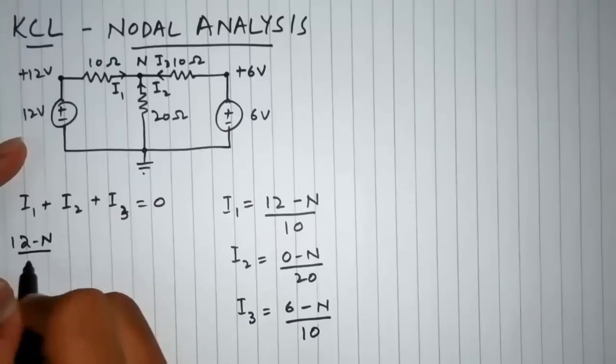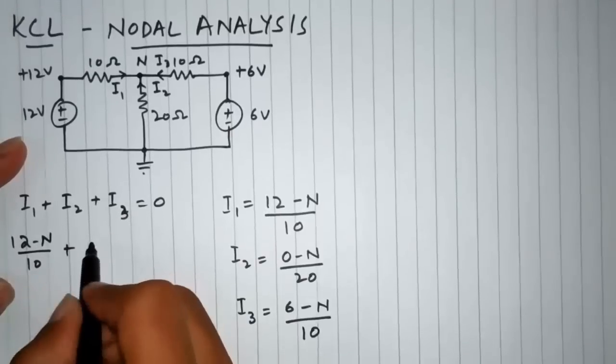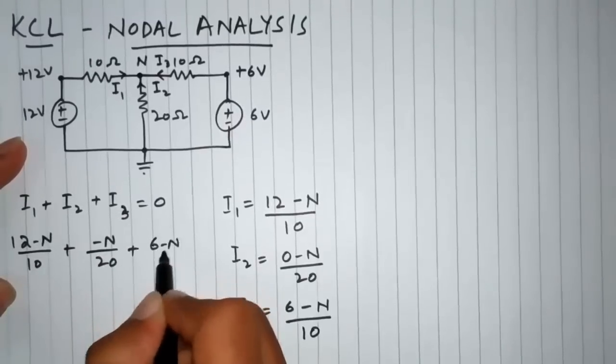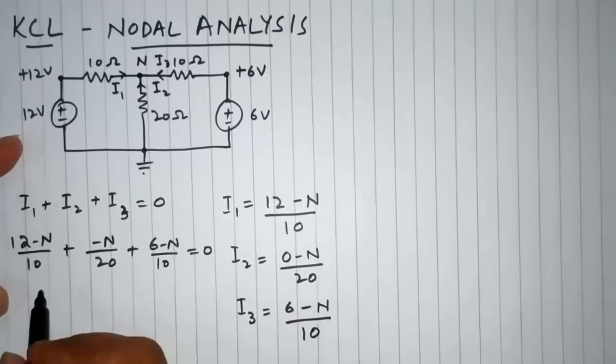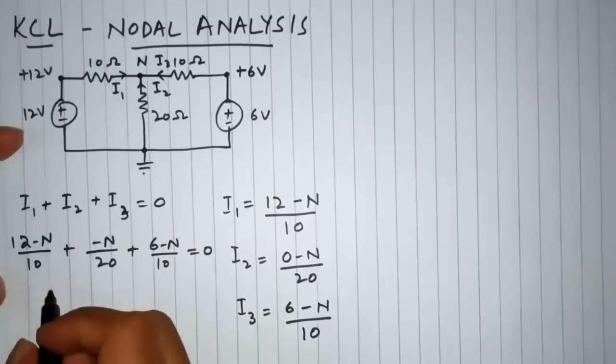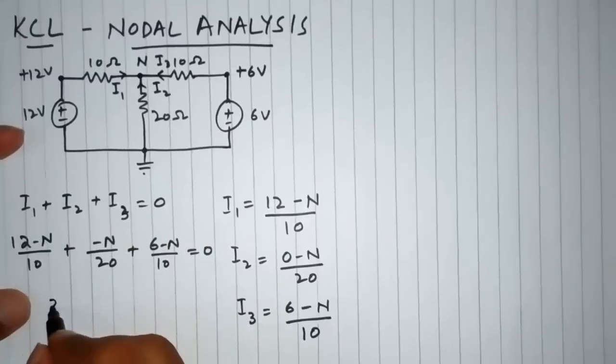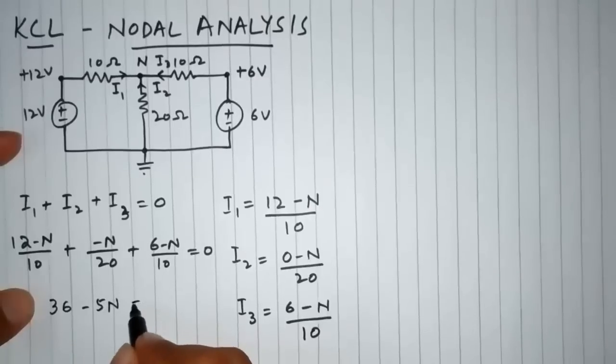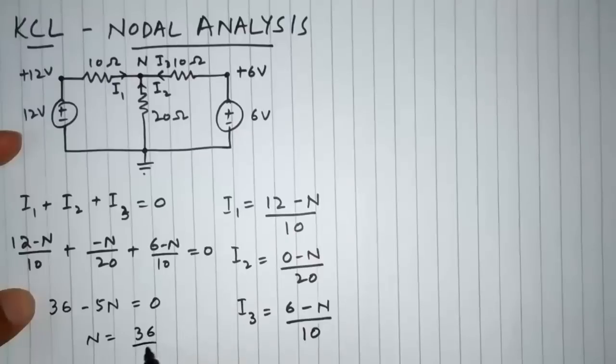Putting it here we will get (12 - N)/10 + (-N)/20 + (6 - N)/10 = 0. Taking the LCM and solving this equation, we will get 36 - 5N = 0, and we will have a value of N which is equal to 36/5, which is 7.2 volts.